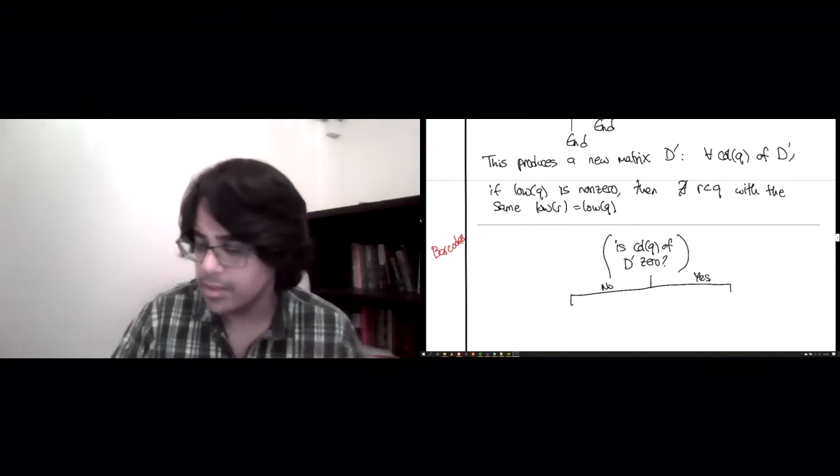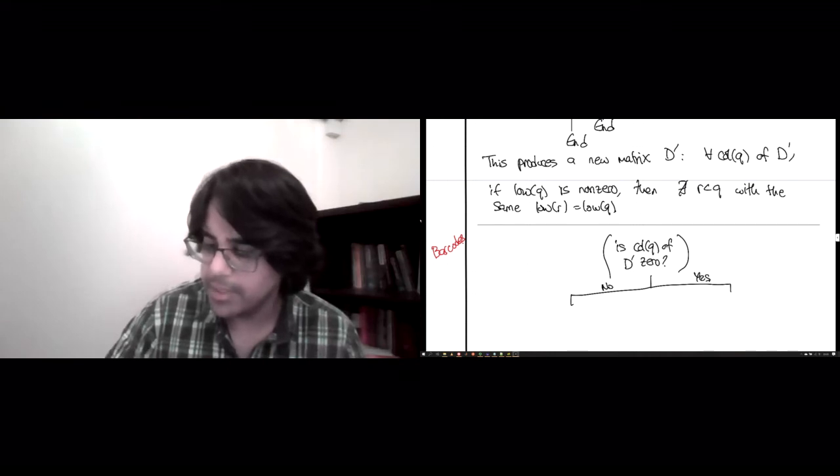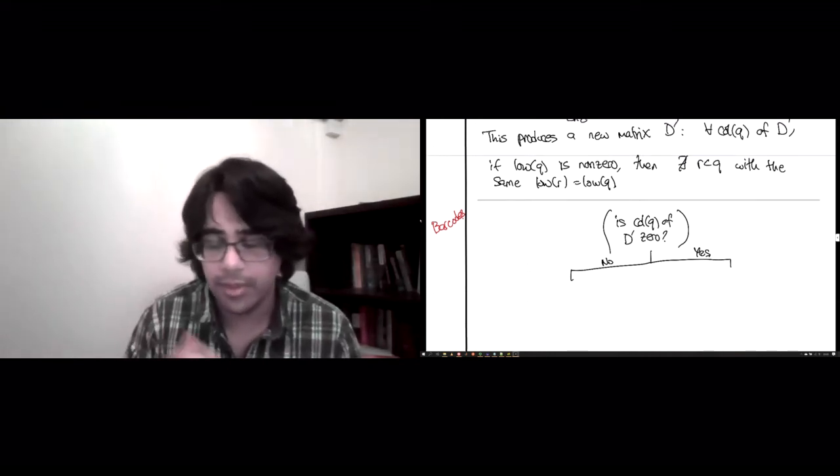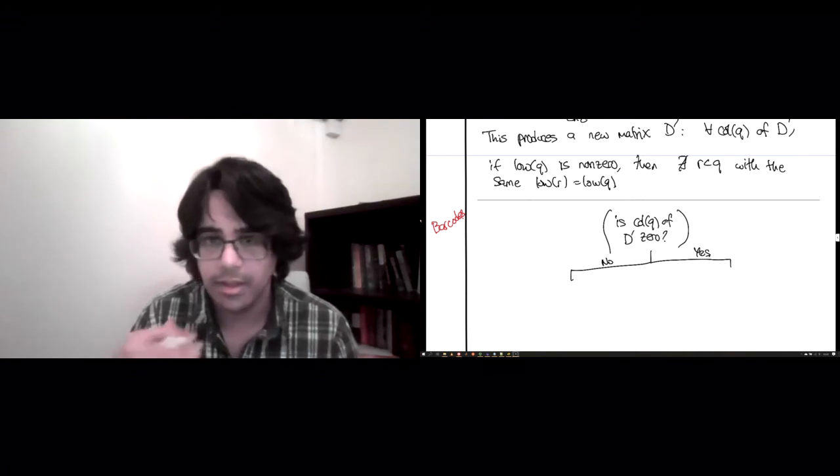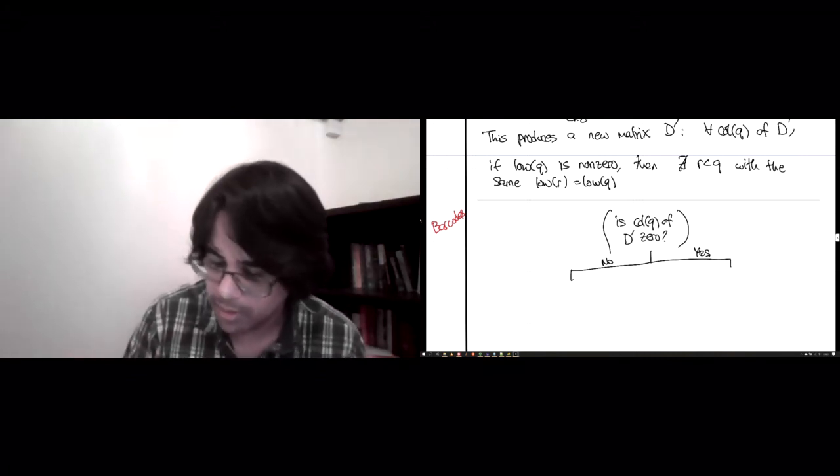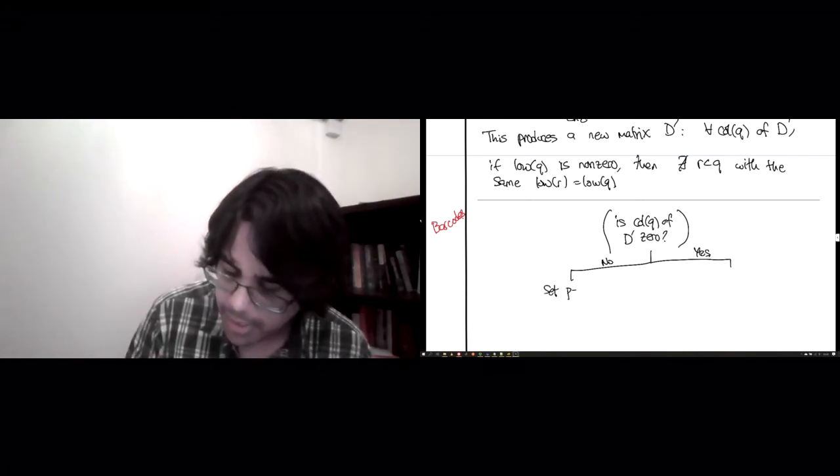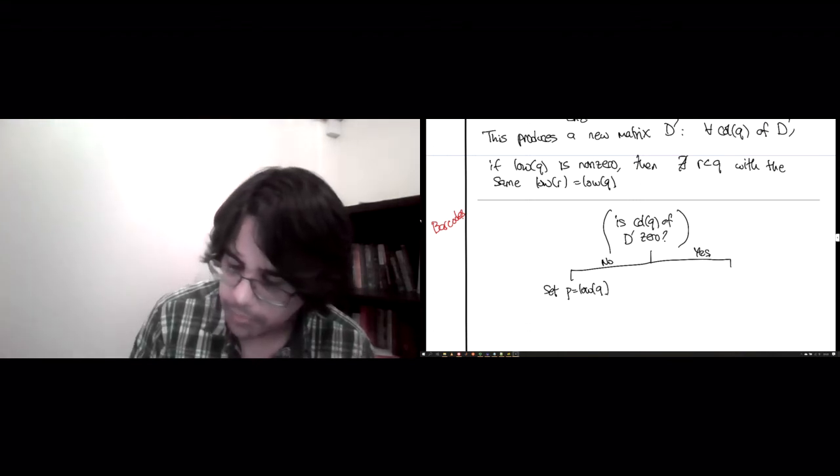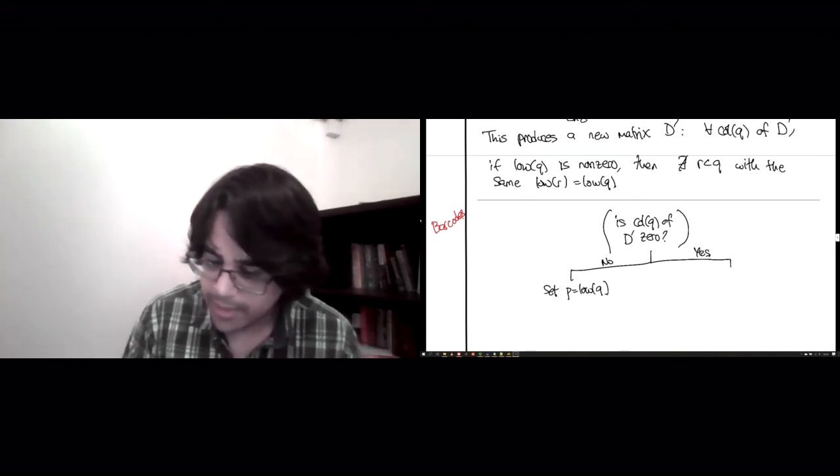Either it isn't or it is. So if it isn't zero, then that means it has some low, because if the column is non-zero, there must be a last row where the entry is non-zero. So set P to be that. And in this case,